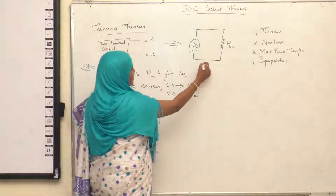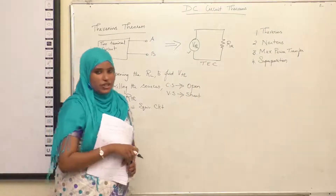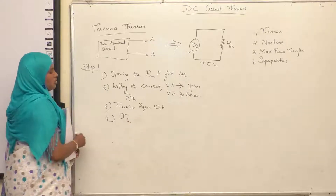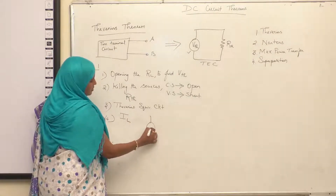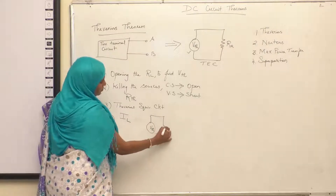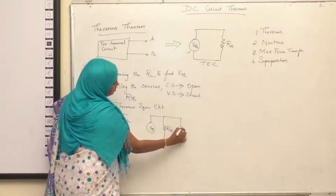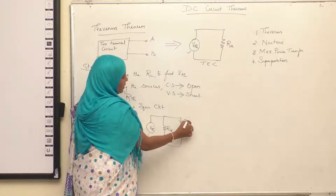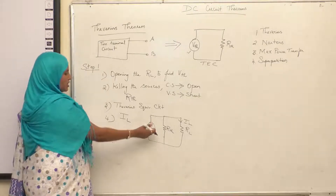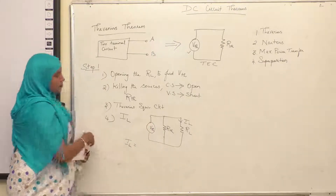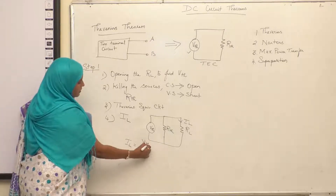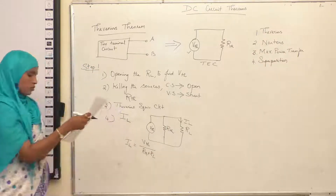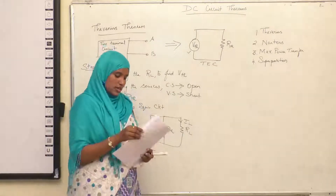Then Step 3 is to draw the Thevenin's equivalent circuit, which consists of VTH in series with RTH. Step 4 is to find the load current IL. To find IL, you add the load resistance RL to the Thevenin's equivalent circuit. So the current flows through RL, which is IL. By using Ohm's law: IL = VTH divided by (RTH plus RL). By this way you can find the current through the load resistance using Thevenin's theorem.